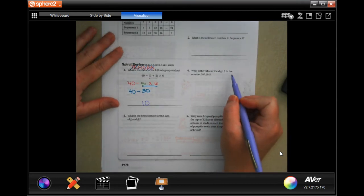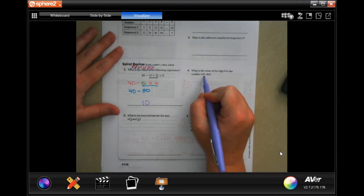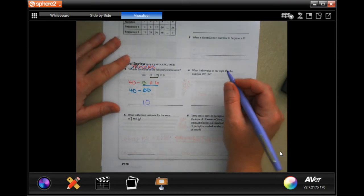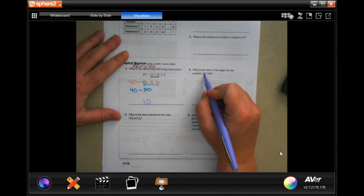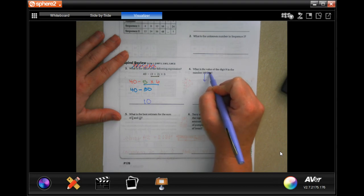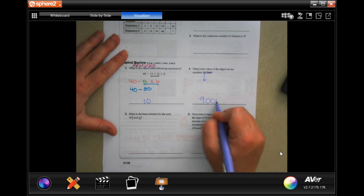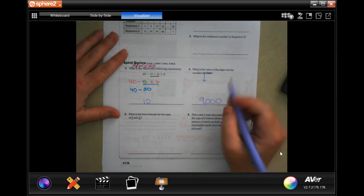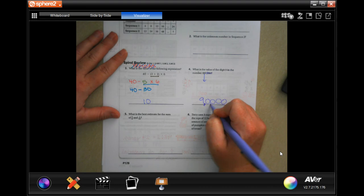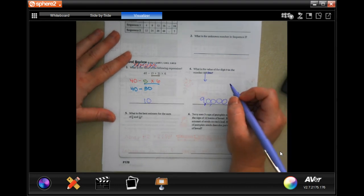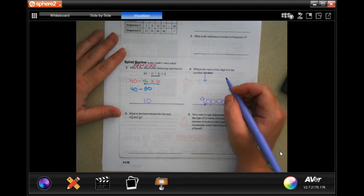What is the value of the digit nine in the number 597,800,184? All you have to do is drop down that nine, and every number afterwards—one, two, three, four, five numbers afterwards—becomes a zero. 90,000.